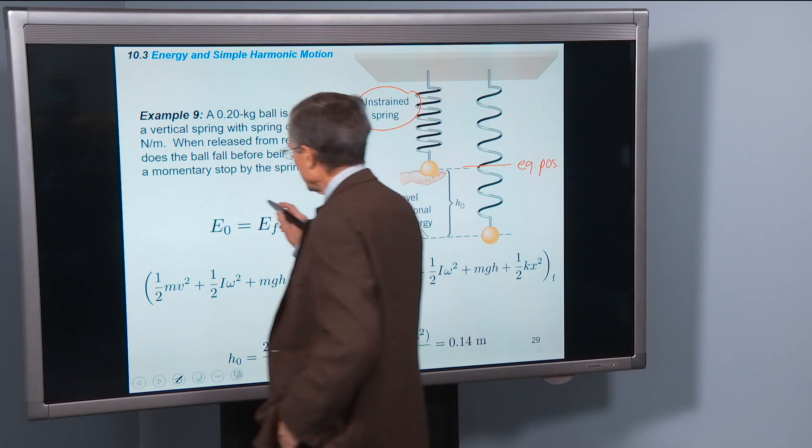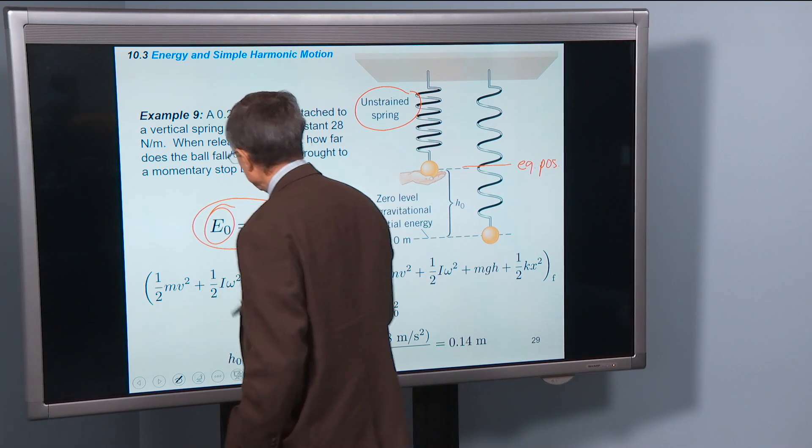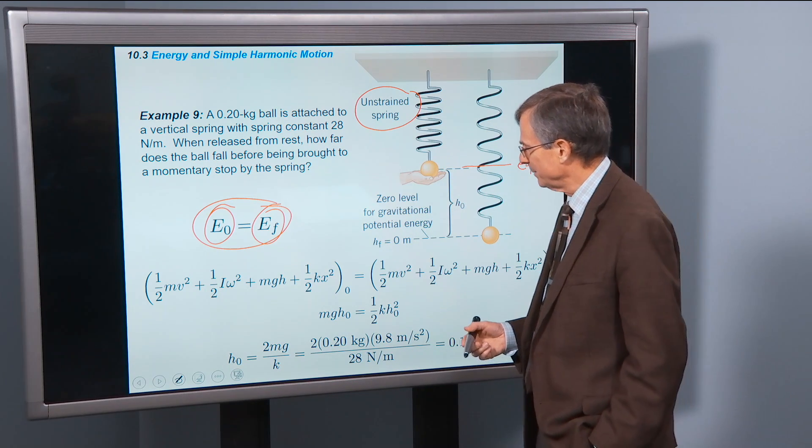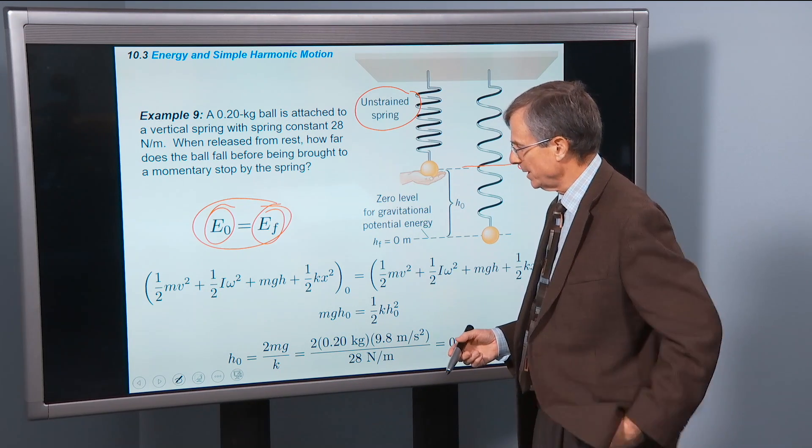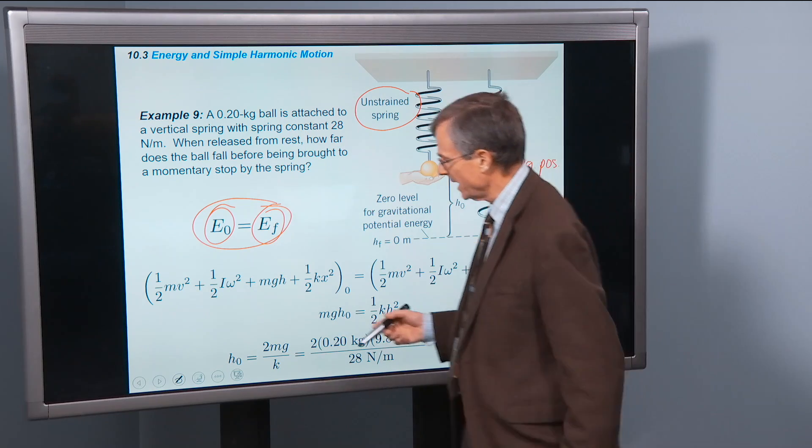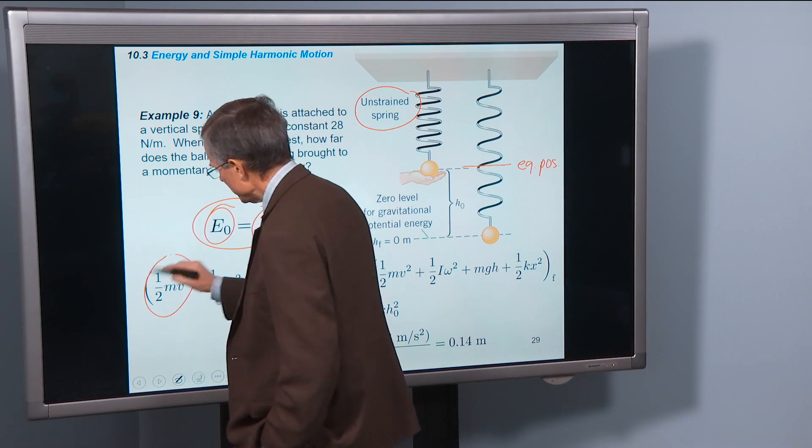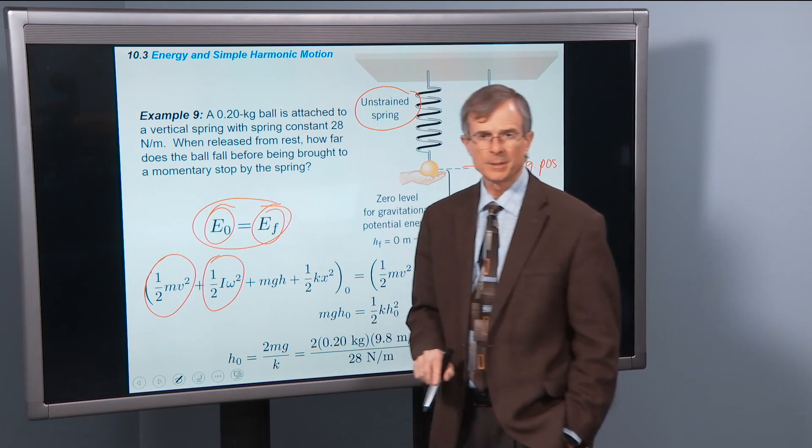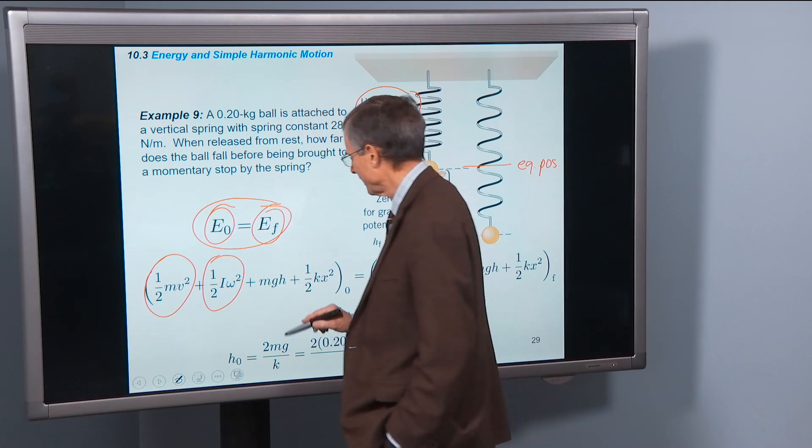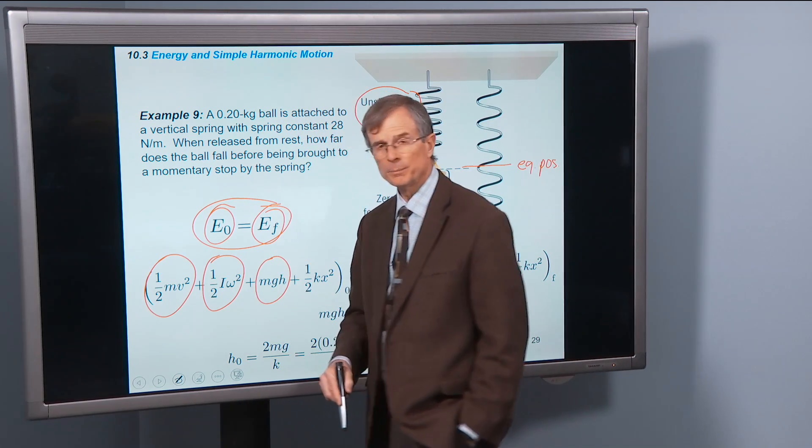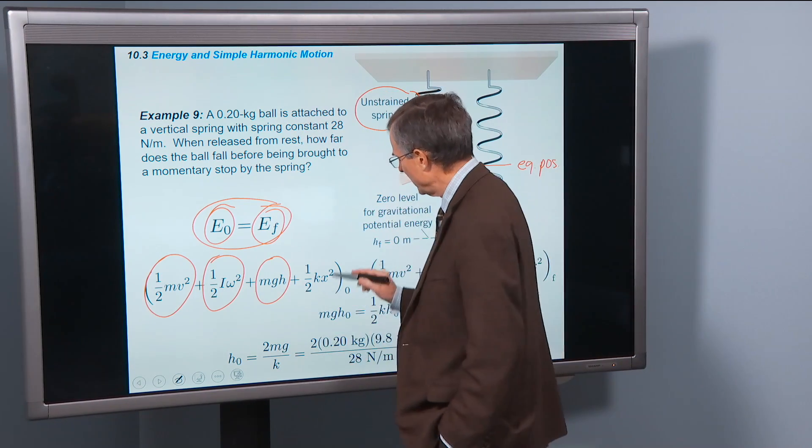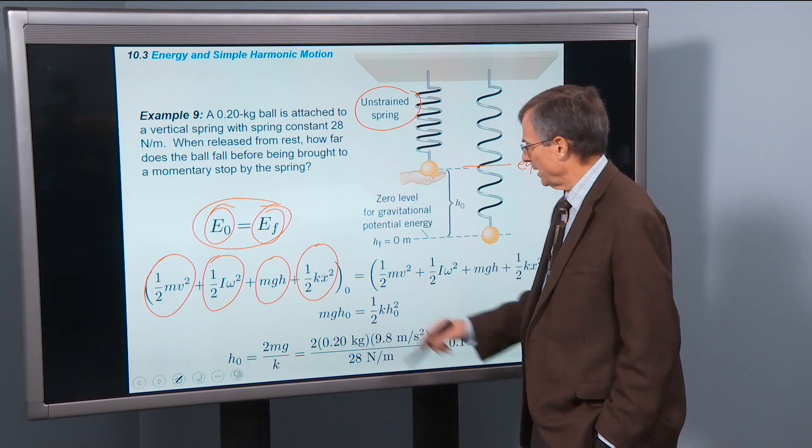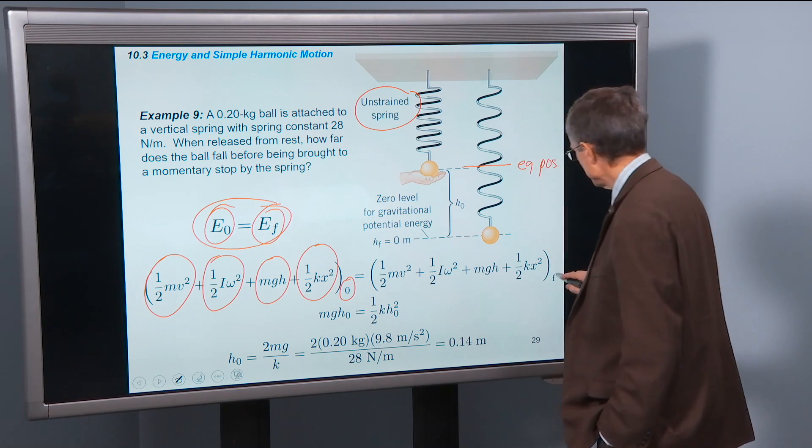The total mechanical energy initial is equal to the final total mechanical energy. And now we get to add another term into the total mechanical energy. We've got translational kinetic energy. We've got rotational kinetic energy that we talked about in the last couple chapters. We've got gravitational potential energy. And we have spring potential energy. Both initially and then those same terms finally.